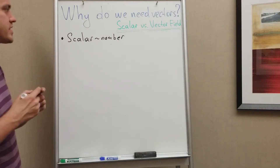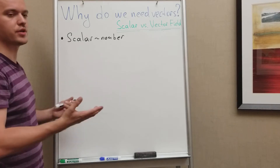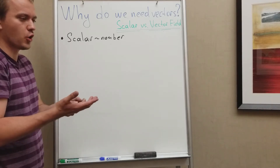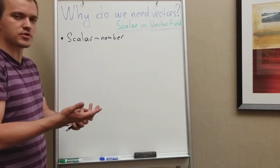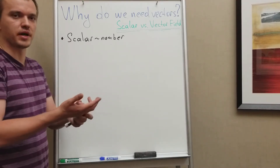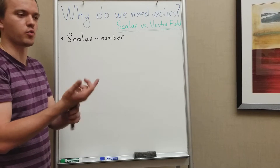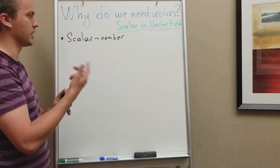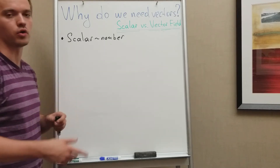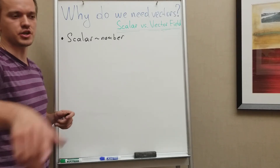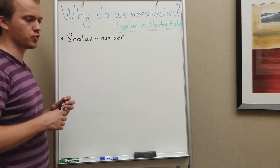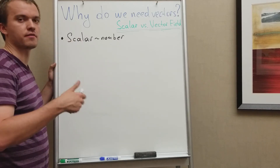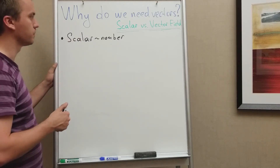Why do we need scalars? Why do we need numbers? How do we start with numbers? We use numbers first by counting — like 1, 2, 3. So we have, for example, 2 apples or 6 chairs in this room, or some girl has 2 and a half apples.